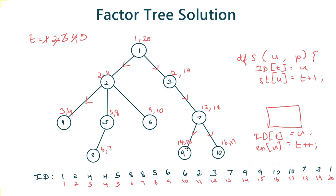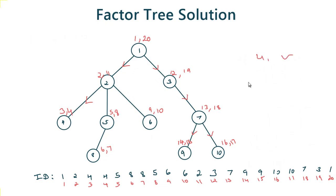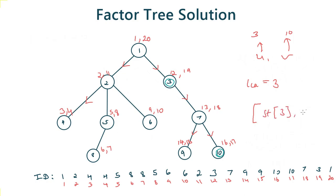Before applying Mo's algorithm we need to determine, given two nodes u and v, how to find all nodes in the path from u to v using the id array. First we find the LCA of u and v using binary lifting in O(log n). Let's say u=3 and v=10. The LCA of 3 and 10 is 3. If the LCA equals u or v, then the nodes in the path are represented by the range from start[LCA] to start[other node].